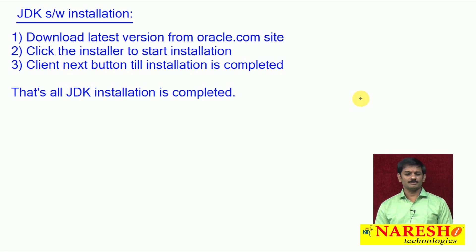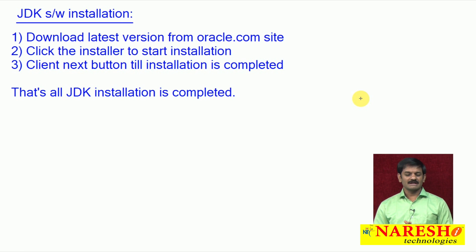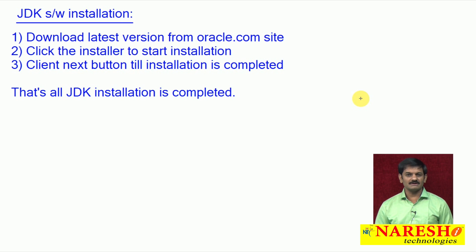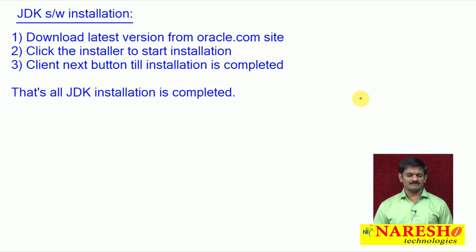First, you must download the latest version from oracle.com. Second, click the downloaded installer — the exe file — to start installation. Third, click the Next buttons until installation is completed. That is all — JDK installation is complete.